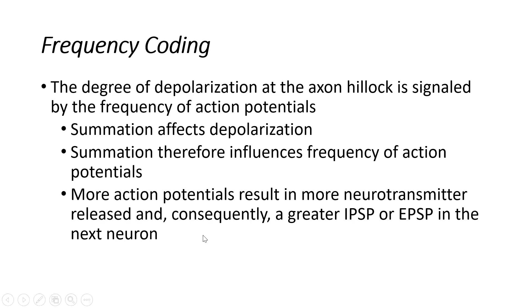The way that is transmitted is that more action potentials traveling down the length of the axon send more of a signal to the axon terminal to release more neurotransmitter. If more neurotransmitter is released at the synapse, that will likely lead to a greater IPSP or EPSP, depending on the types of channels that neurotransmitter opens or closes. We're thinking about those ligand-gated channels and what would happen if we open or close them depending on the response to that neurotransmitter.